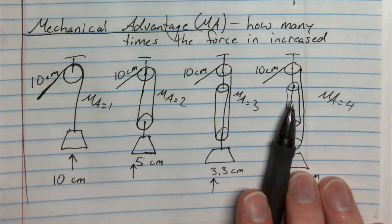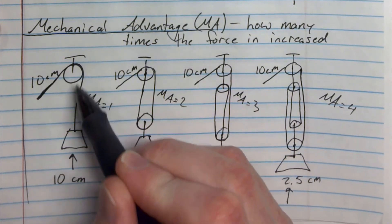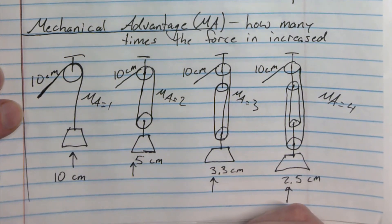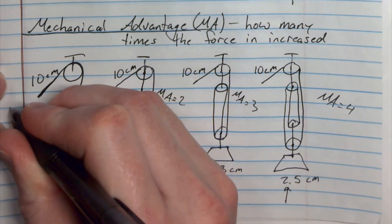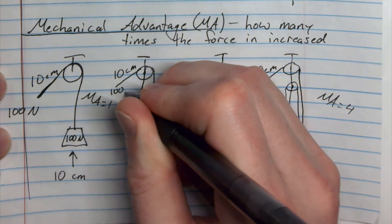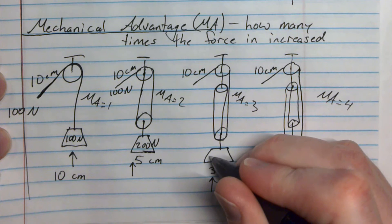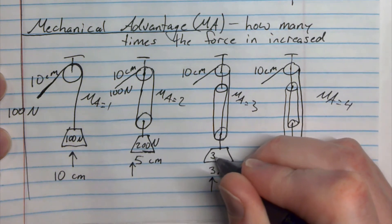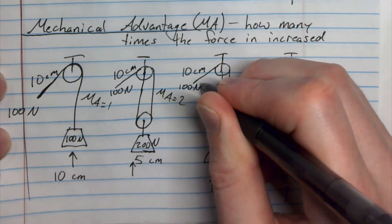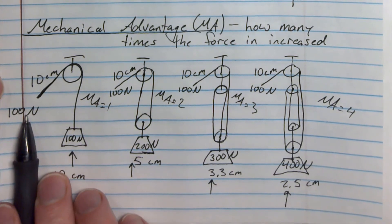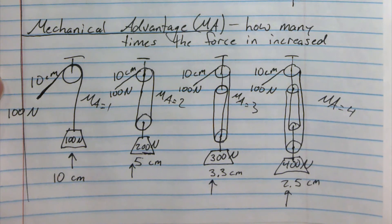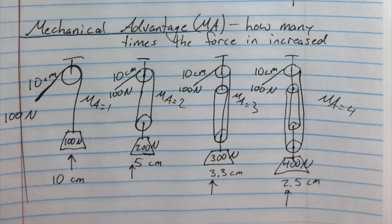These are pulleys and pulleys are really cool. If I pull 10 centimeters here, this goes up 10 centimeters. There's no mechanical advantage. If I pull 100 Newtons, it lifts 100 Newtons. But if I do 100 Newtons here, it's 200 Newtons, and mechanical advantage of 3, so 300 Newtons, and 400 Newtons. It's multiplying my force that I pull. This one is by 1, this one it's multiplying by 2, this one's multiplying by 3, and this one's multiplying by 4.